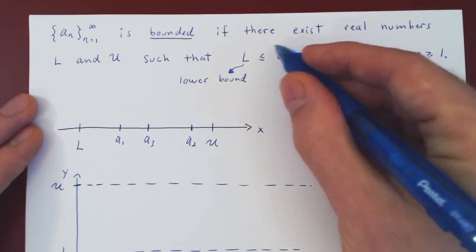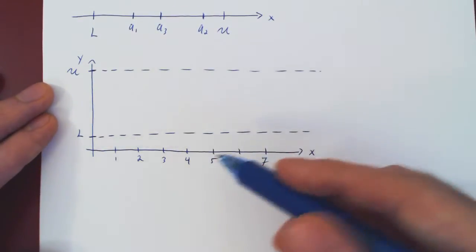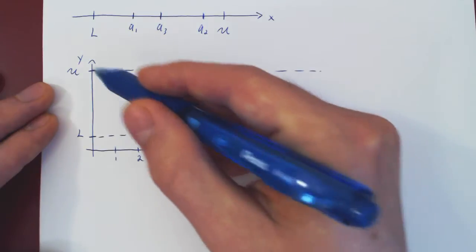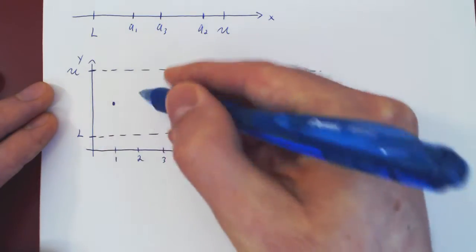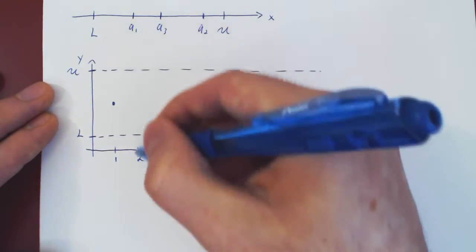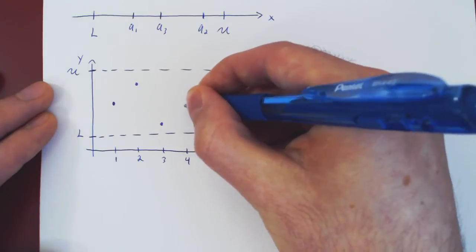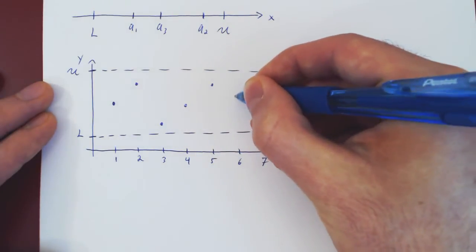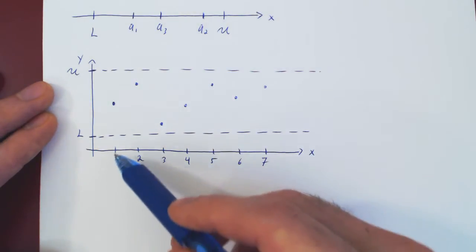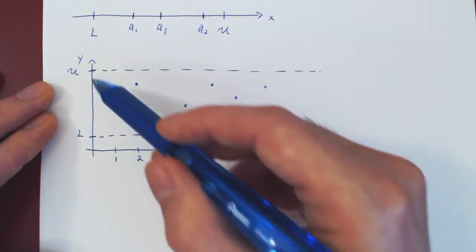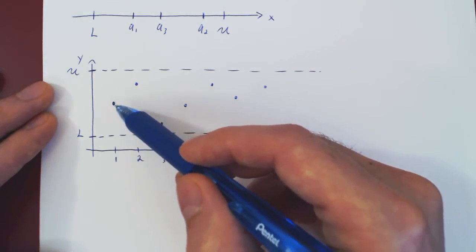And again, we know that every term of the sequence must be between L and U. So if you view your sequence this way, we know that at every positive integer, the y-value is the corresponding term of your sequence. So a_1 would be between L and U, a_2 wherever it is has to be between L and U and so forth. So a_3, a_4, a_5, a_6, a_7, and so forth. So you can imagine again,